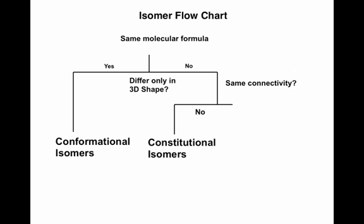No amount of rotation can change the cat on the left to the cat on the right. So based on this, we can start building a flow chart of different isomers. If the molecules have the same molecular formula but only differ in their three-dimensional shape — in other words, they can be interconverted through a bond rotation — we call them conformational isomers. If they differ in their connectivity, they are constitutional isomers.